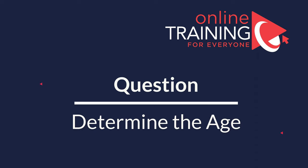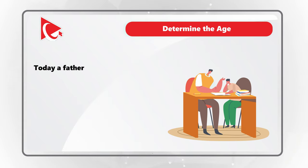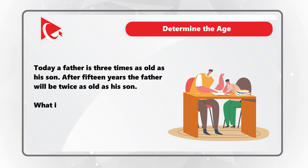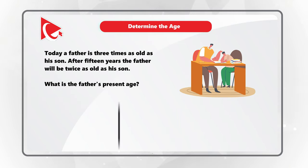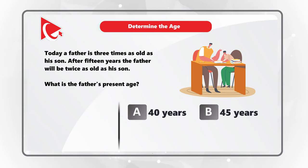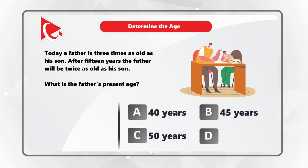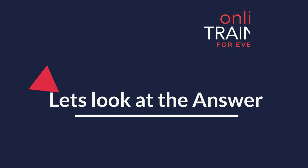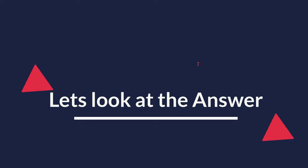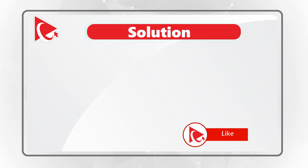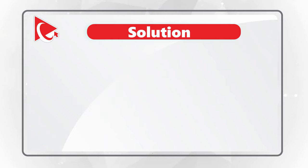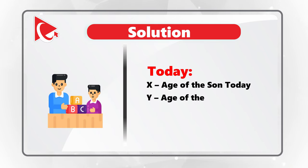Here is a frequent test problem where you need to determine the age of family members. Today, a father is 3 times as old as his son. After 15 years, the father will be twice as old as his son. What is the father's present age? Choices: A) 40 years, B) 45 years, C) 50 years, D) 55 years. We will build an expression: let x be the son's age today and y be the father's age today, so our first formula is 3x = y.